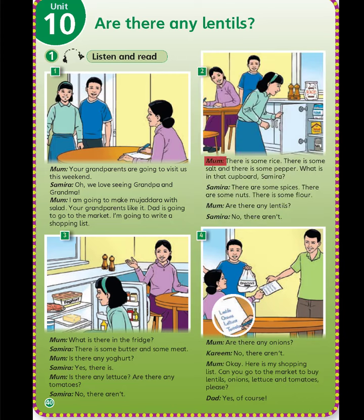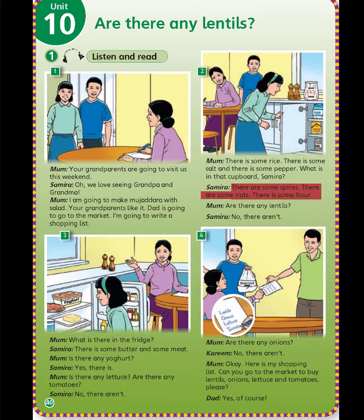Two. Mom: There is some rice, there is some salt, and there is some pepper. What is in that cupboard, Samira? Samira: There are some spices, there are some nuts, there is some flour. Mom: Are there any lentils? Samira: No, there aren't.